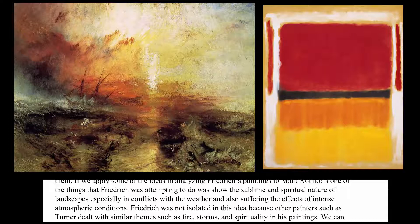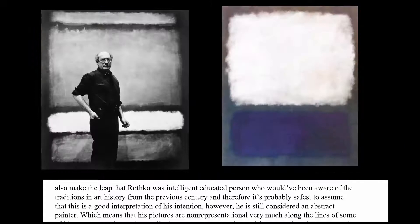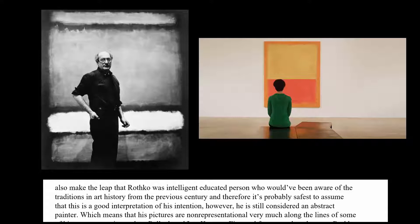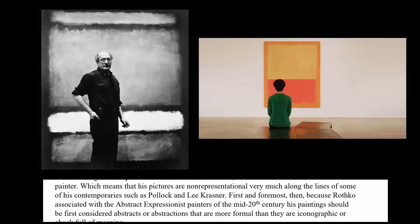If you look at the colors in Rothko's paintings, there could be a sort of link between these painters, especially when you consider that he was an educated man who would have been aware of the traditions in art history from the previous century. I think Robert Rosenblum probably had a pretty good interpretation of this.